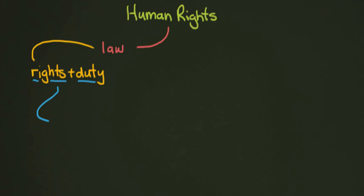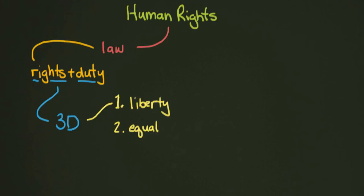From here, we moved into our three dimensions — I'm just going to call them the three Ds. We talked about the three different levels, and we had our little shortcut from the French Revolution: liberty, equality, and fraternity. Each of those has an actual real name — those are sort of the nickname, the bridge to help you remember what they mean.